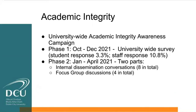Phase one of the project involved surveying all DCU stakeholders. The overall survey uptake was 3.3 percent, which was quite disappointing, though the staff response was more favourable at nearly 11 percent. Phase two involved sharing the findings from the data analysis with different stakeholders across the university and using them as part of targeted conversations.